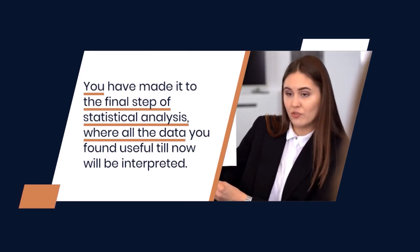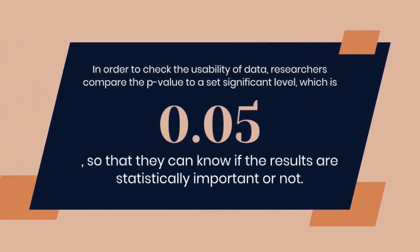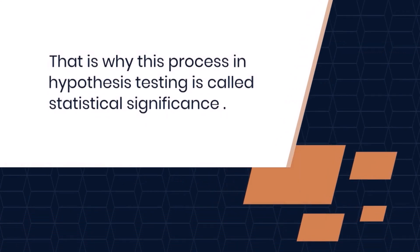In order to check the usability of data, researchers compare the p-value to a set significant level, which is 0.05, so that they can know if the results are statistically important or not. That is why this process in hypothesis testing is called statistical significance.